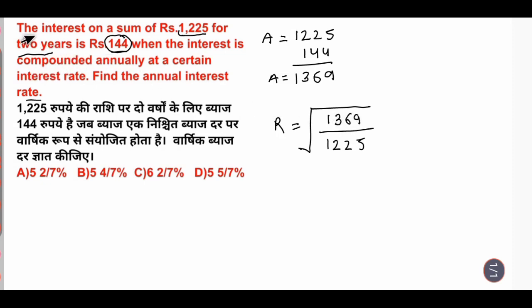How much is it for? Two years. So let's see, the root of 1369 over 1225, which gives us 37 over 35.